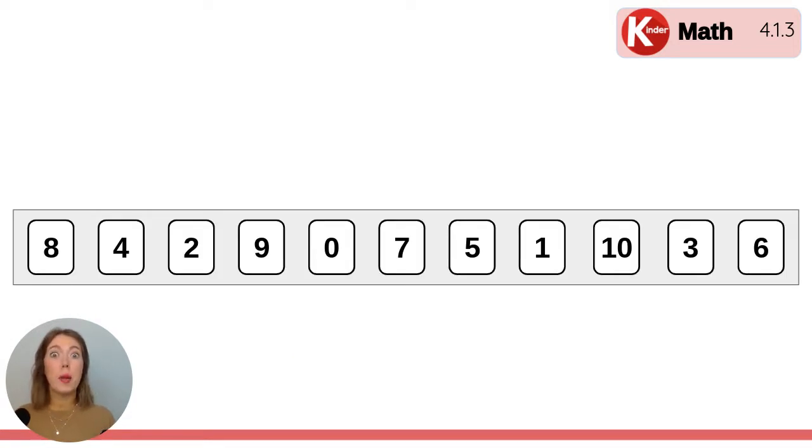Next, we're going to put these numbers in order to build a number line. This time you can't see the blue line. We're just going to organize the cards as if there was a line starting with number zero and going all the way to number 10.